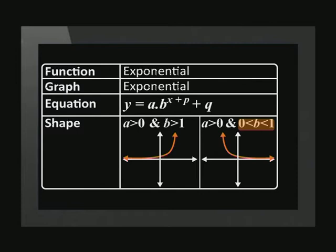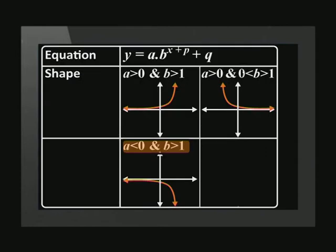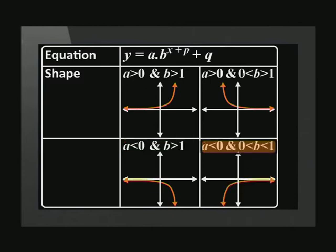The graph will lie below the asymptote if the value of a is negative. In this case, if b is greater than 1, then the graph is a decreasing function. If b lies between 0 and 1, it will be an increasing function.